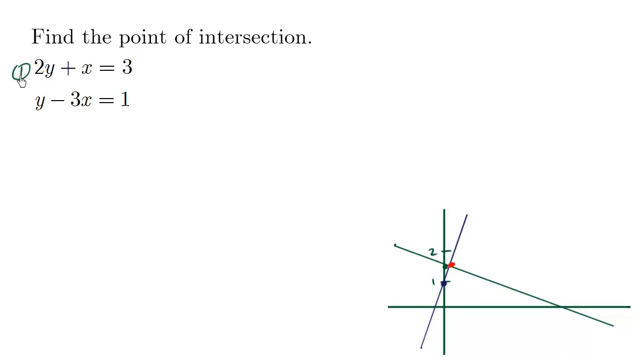This is equation number 1. We're going to say 2y equals negative x, because positive x when it goes over becomes negative x, plus 3. We're going to divide both sides by 2, and we get y equals negative 1/2 x plus 3/2, which is what we just did. So we have this equation 1 here. And as for equation 2, we're going to also solve for y. y is equal to 3x plus 1.